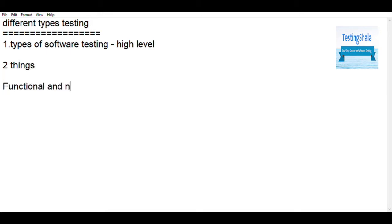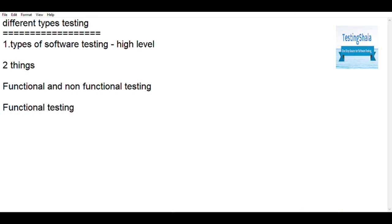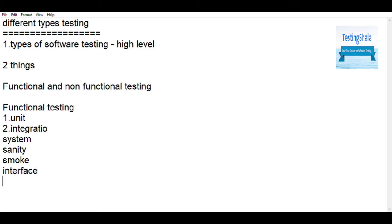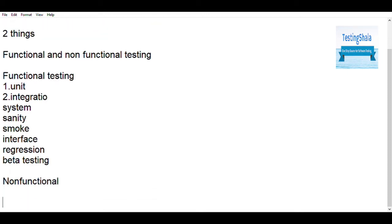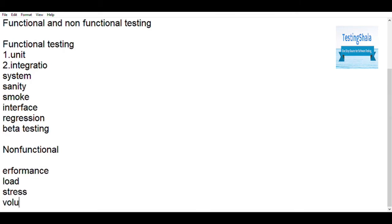So let us move on to understand what the types of software testing are about. On a very high level, software testing is classified into two things: one is functional testing and the second is non-functional testing. Functional testing has been further broken down to unit testing, integration testing, system testing, sanity testing, smoke testing, interface testing, regression testing, and beta testing.